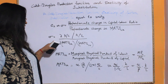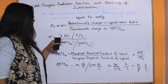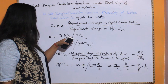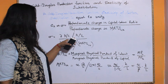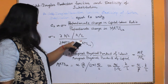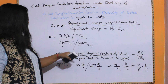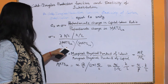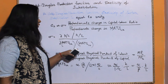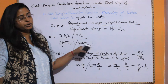We can write this as: change in the capital-labour ratio upon the capital-labour ratio, divided by the change in MRTS of labour for capital upon MRTS of labour for capital.